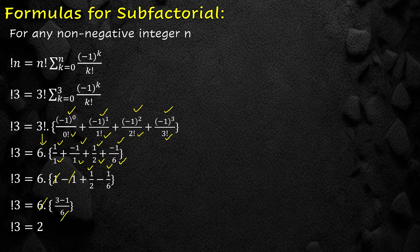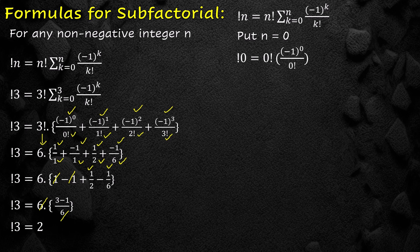Now we find the sub-factorial of 0. We write the formula and put n equal to 0. Therefore sub-factorial of 0 is equal to 0 factorial into minus 1 raised to power 0 over 0 factorial, as there is only one iteration. Sub-factorial of 0 equals 1 into 1 over 1, since 0 factorial is 1 and minus 1 raised to power 0 is 1. Hence sub-factorial of 0 is 1.